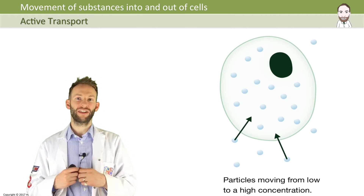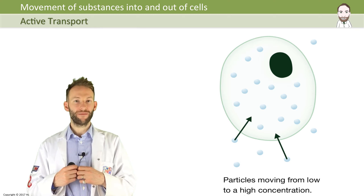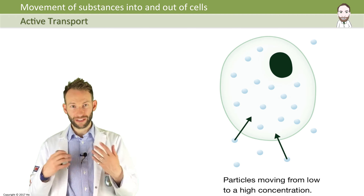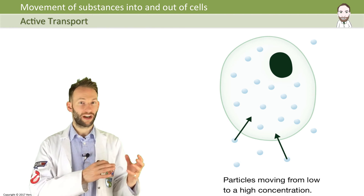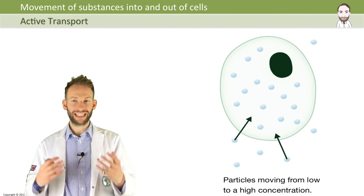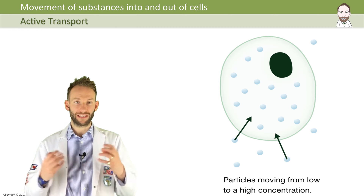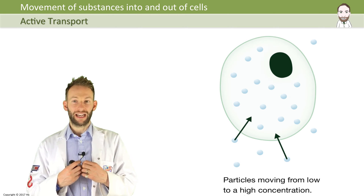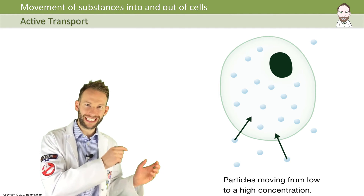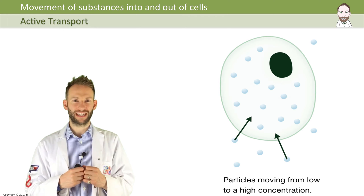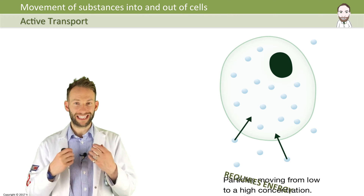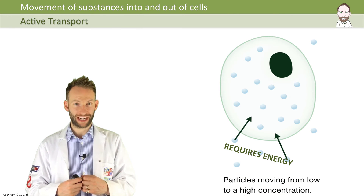In active transport, sometimes a cell will need to take in a substance against a concentration gradient. If you remember back to diffusion, molecules move from a high concentration to a low concentration. That's fine if the cell is in an environment where there is a high concentration of something outside that it wants. But what if the cell already has quite a lot of these molecules inside, as this diagram shows, and there are only a few outside? There's a much lower concentration outside, but it still wants to get those molecules in.